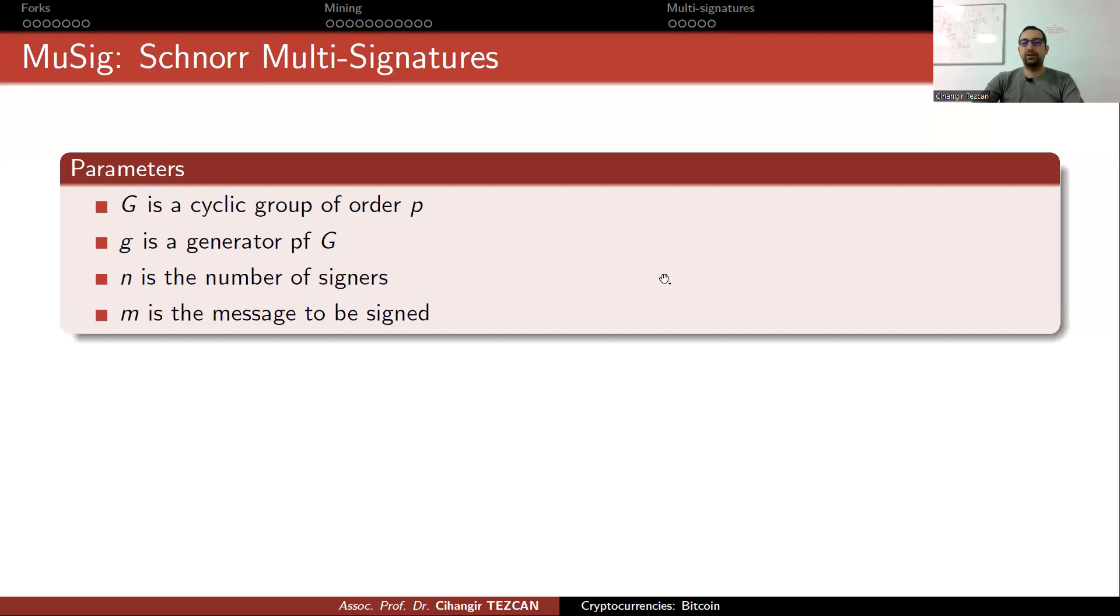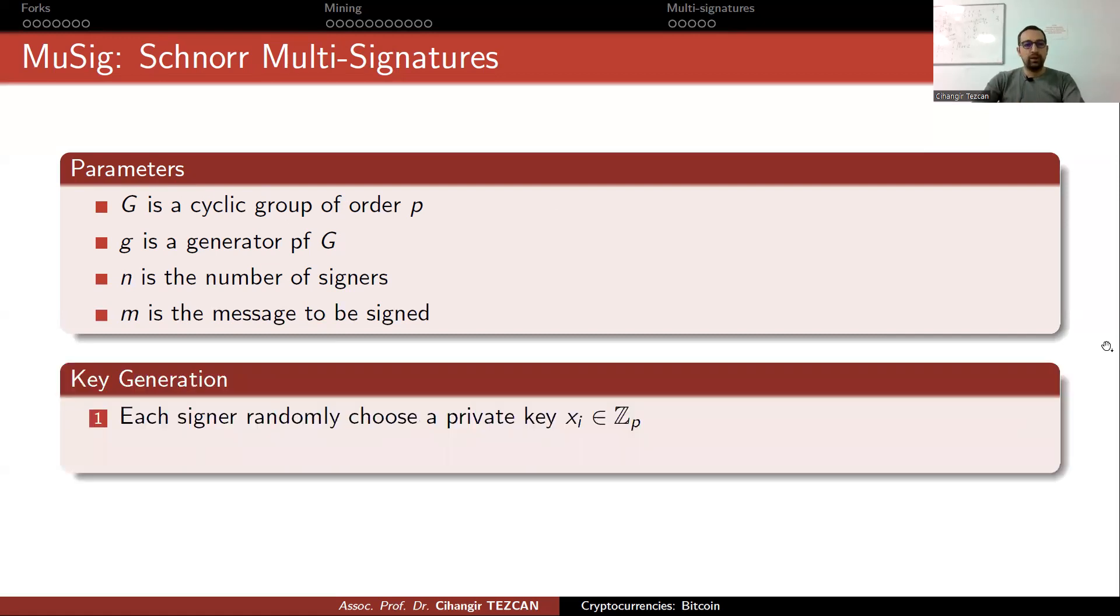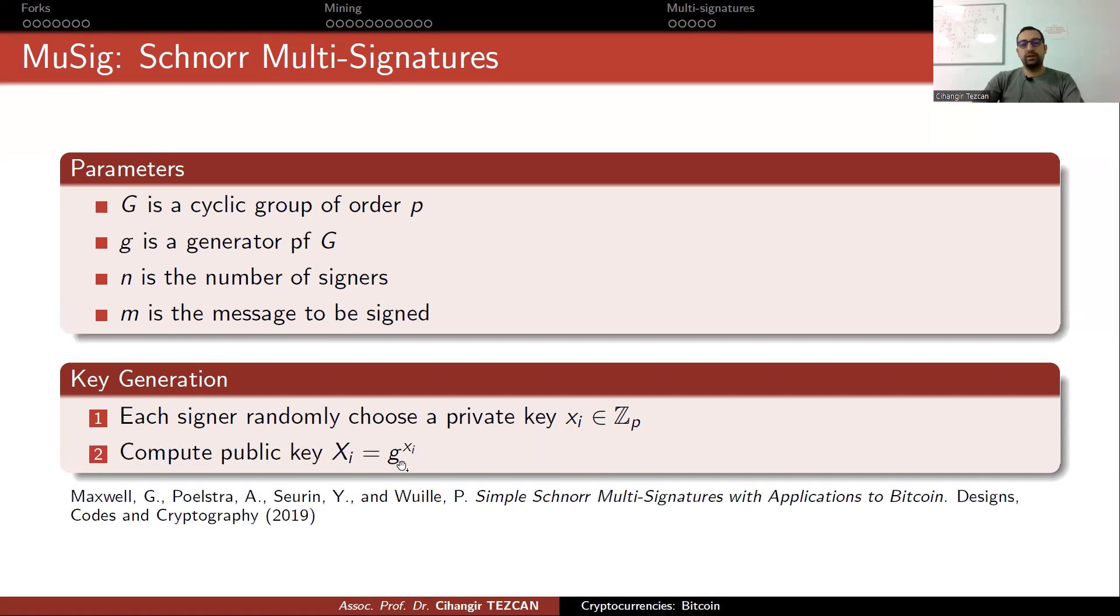The idea is as follows. We start with parameters. G is a cyclic group of order P. Small g is the generator for G. N is the number of signers, m is the message to be signed. So, the cyclic group here, as you can imagine, we are using the elliptic curve of Bitcoin. Key generation: Each signer randomly chooses a private key x_i. Then compute G to the x_i, which provides capital X_i. So, as you can see, we are still relying on the hardness of the discrete logarithm problem. Of course, this is multiplicative notation. Again, when we work in elliptic curves, we simply add the point G to itself x_i many times.